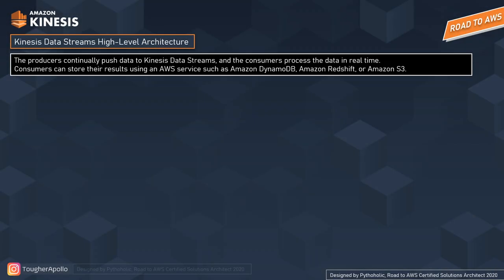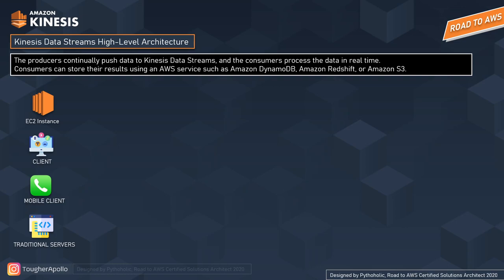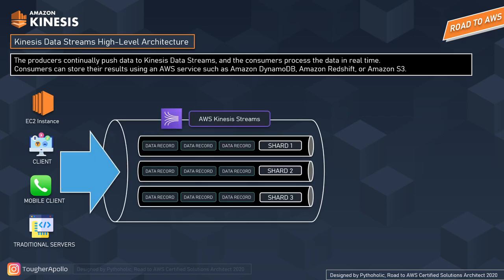Now let's check the high-level architecture of Kinesis Data Streams. Producers include EC2 instances, clients, mobile clients, and traditional servers like web servers or log-generating services. Using the Kinesis API, these push data to Kinesis Data Streams. A Kinesis Data Stream is a set of shards, and each shard has a sequence of data records. Each data record has a sequence number assigned by Kinesis Data Streams.